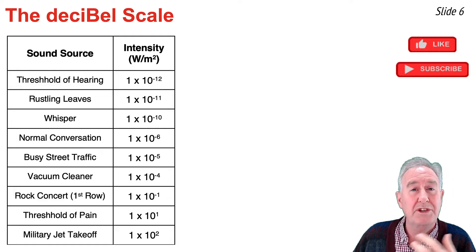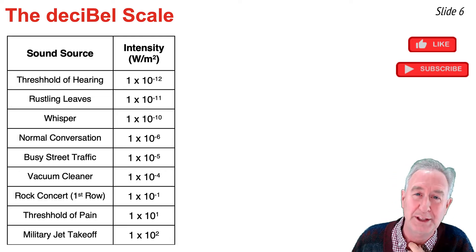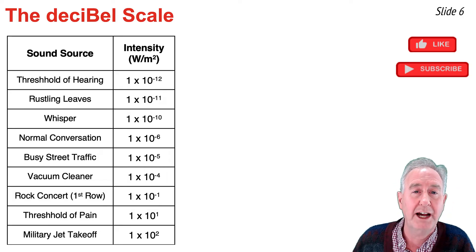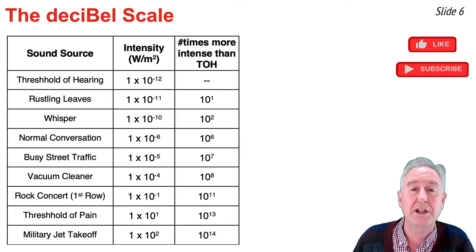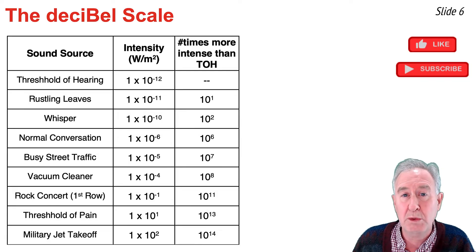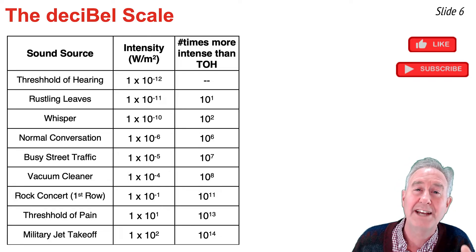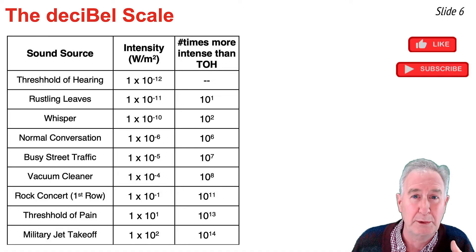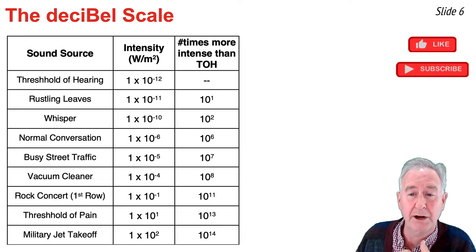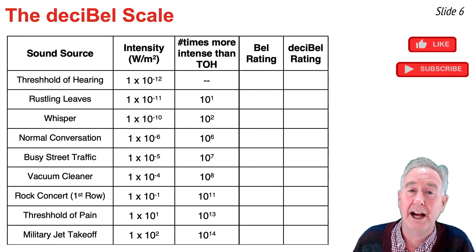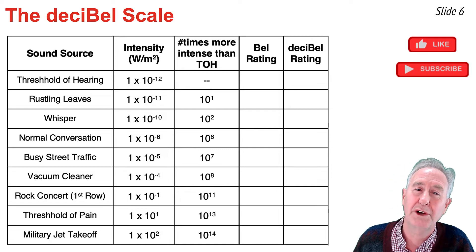I'm going to list a table with several sources of sound and their respective intensity levels in watts per meter squared. There's a row for the threshold of hearing at the top and the threshold of pain near the bottom. I'm going to add a column showing how many times more intense each row is than the threshold of hearing, expressed as a power of 10. Then I'll add columns for the bell rating and the decibel rating.